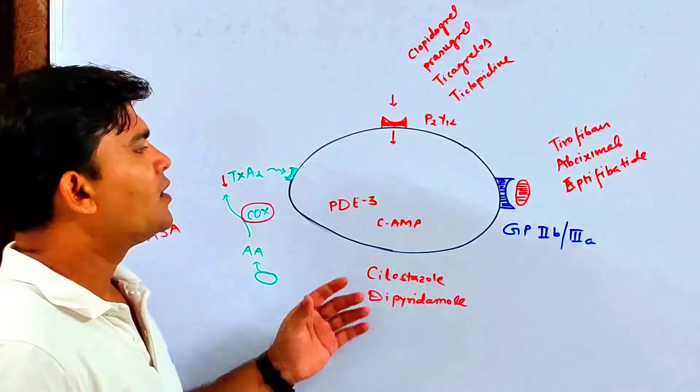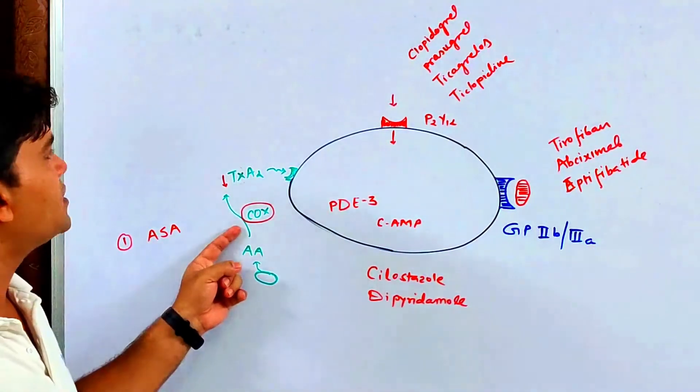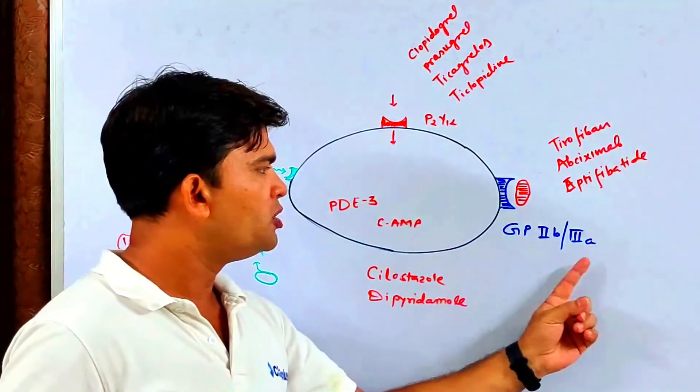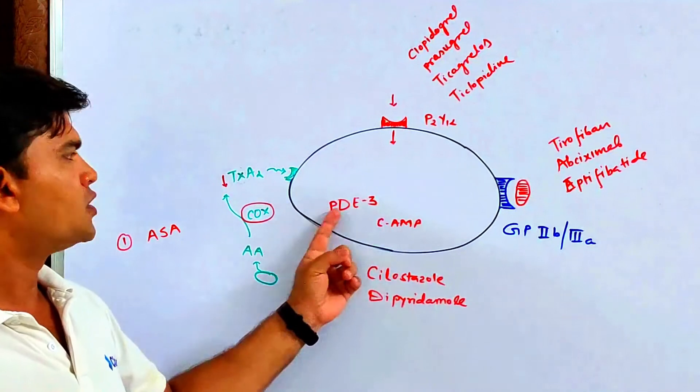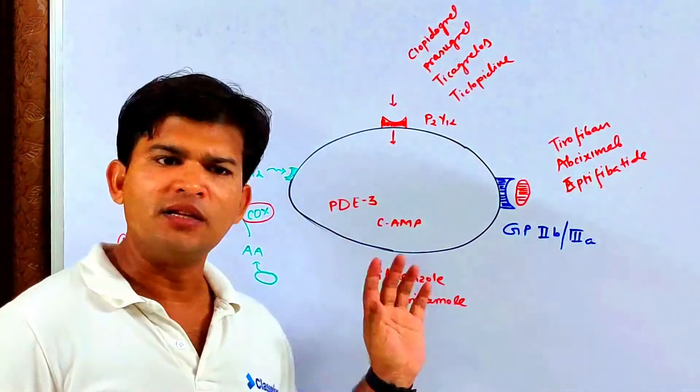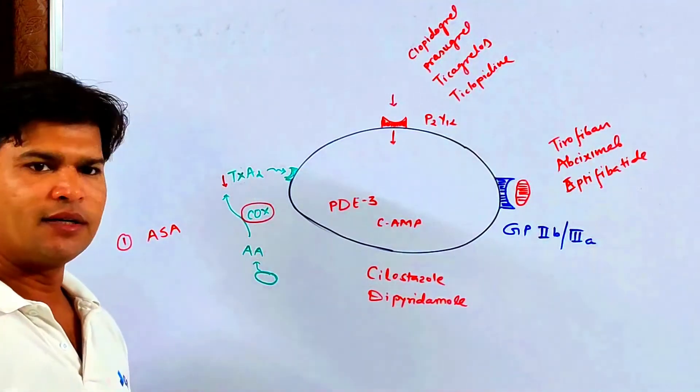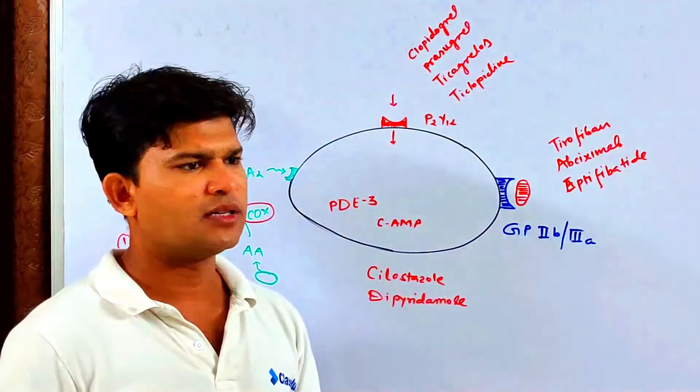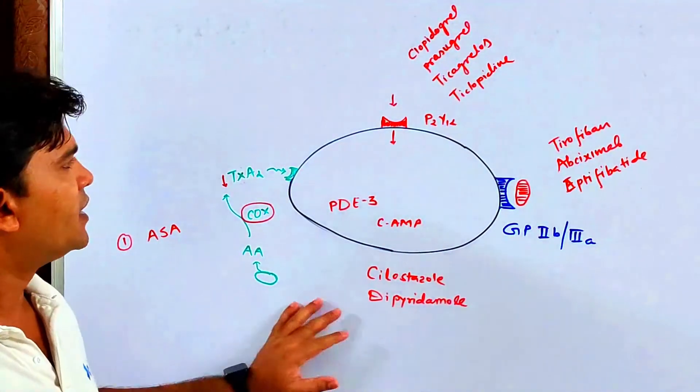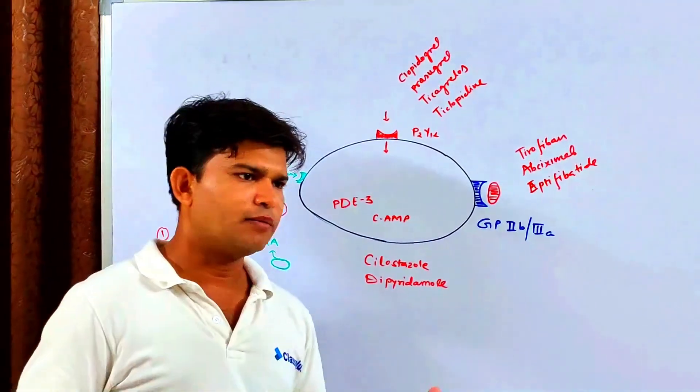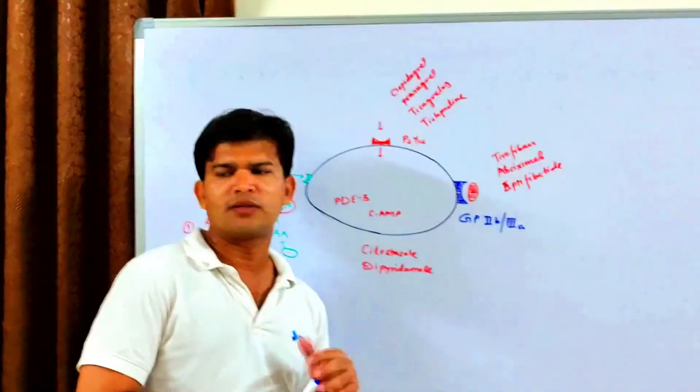So four groups: COX inhibitors, then P2Y12 receptor blockers, direct GP2B3A blockers, and phosphodiesterase-3 inhibitors. These are the four groups of drugs which act as anti-platelets or anti-platelet aggregation drugs that we have discussed in very detail. So yes, now let's discuss the medical uses or indications of these drugs.